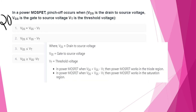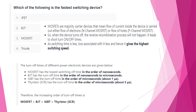The MOSFET operating conditions: when VDS is less than (Vgs − VT), it operates in the linear (triode) region. When VDS is greater than (Vgs − VT), it operates in the saturation region.